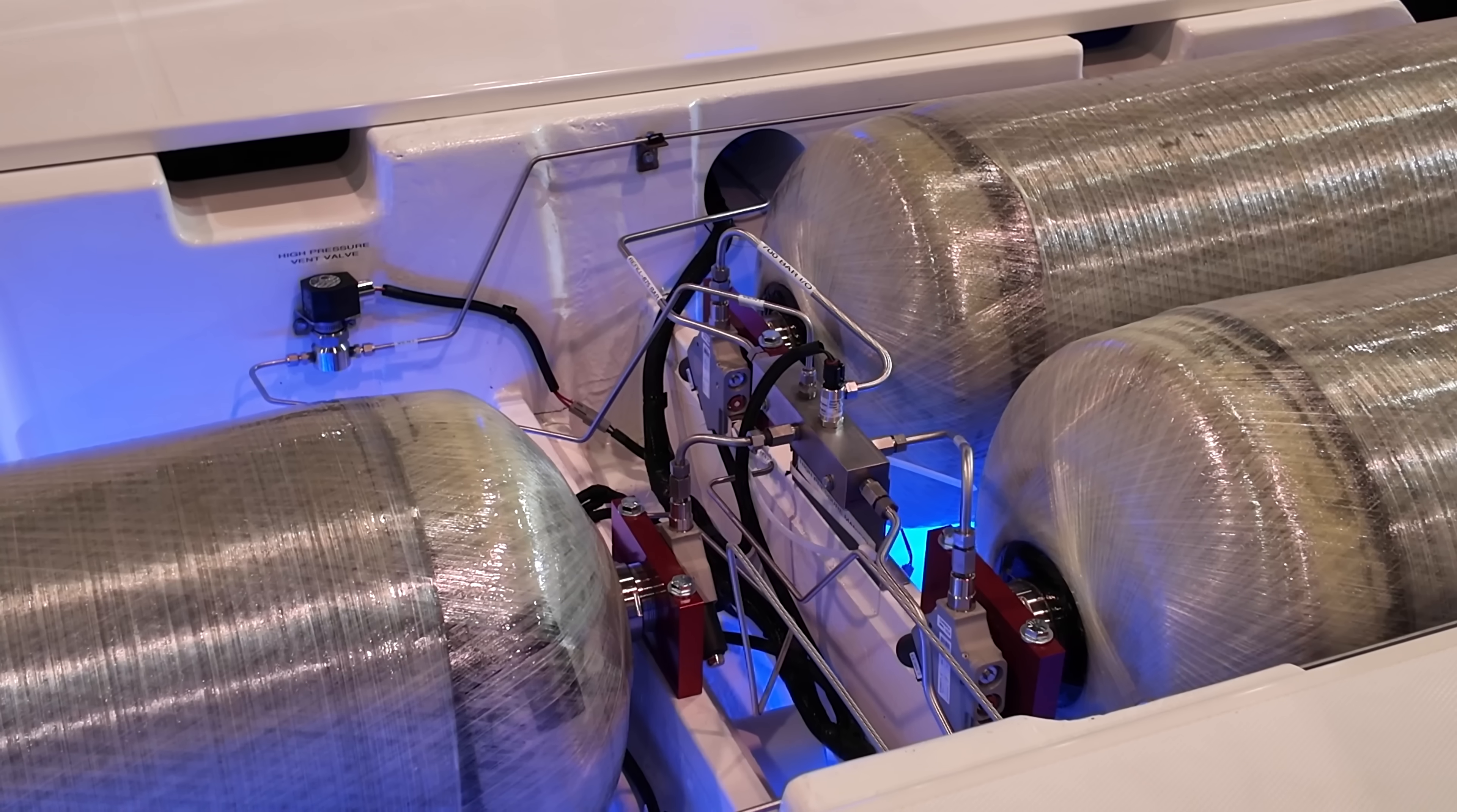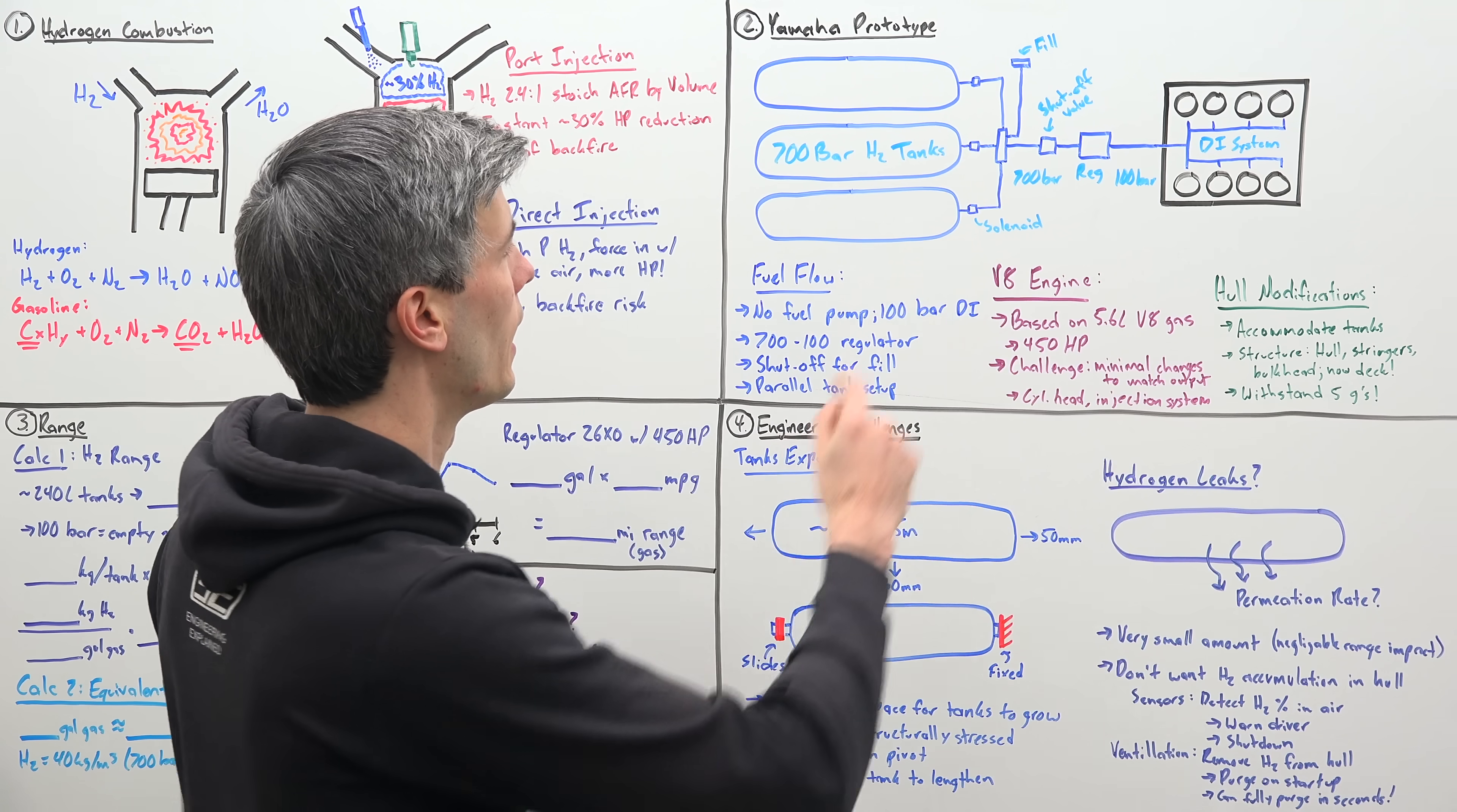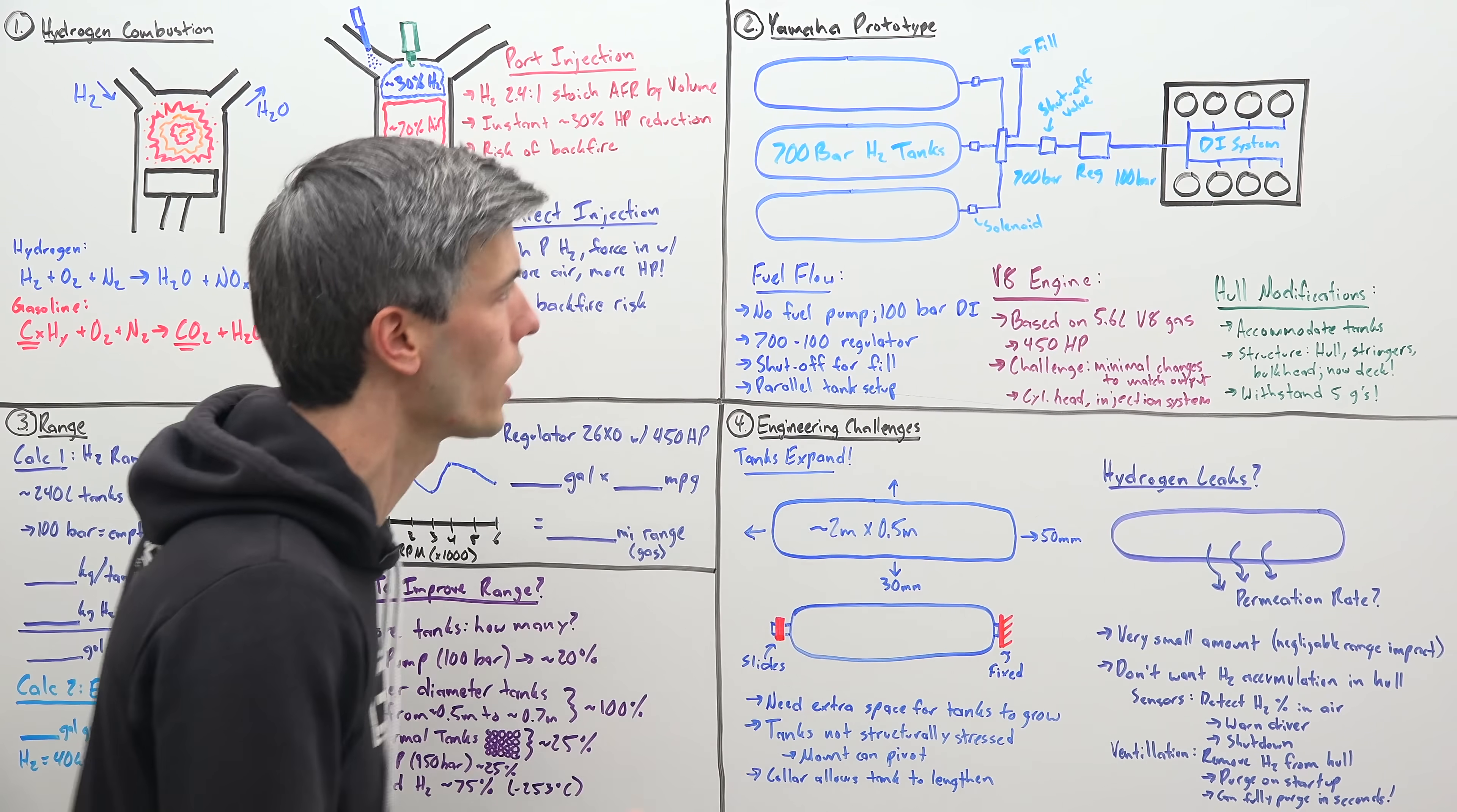So from these tanks, they all run into a common collector. You, of course, will have a shutoff valve and you've got solenoids so you can isolate individual tanks or if you need to fill the tanks. And then from there, you're at 700 bar. You go through a regulator and you drop that down to 100 bar. So that is the injection pressure for the fuel injection system, the direct injection system.